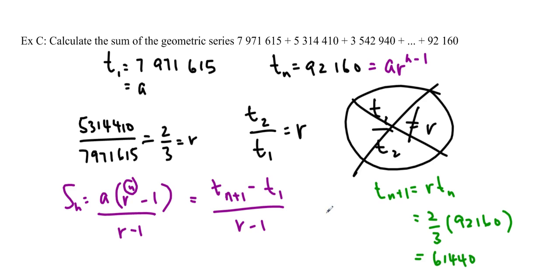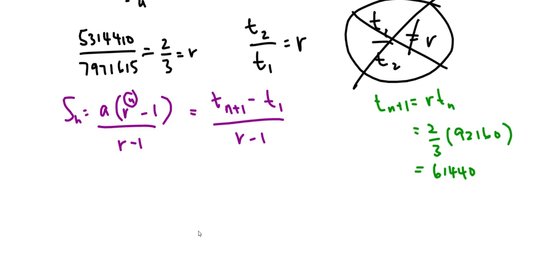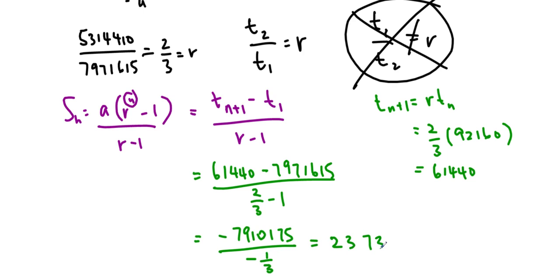So I'm going to just plug that into the equation and then I'll find the answer. So, it's 61,440 minus the giant first term, which was 7,971,615 over, two-thirds minus one. Sorry, I was just slightly confused right there. So, we'll get negative 7,910,175 divided by negative one-third and it ends up being 23,730,525. So, there you go. It's a nice big number.